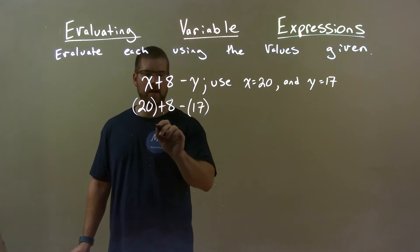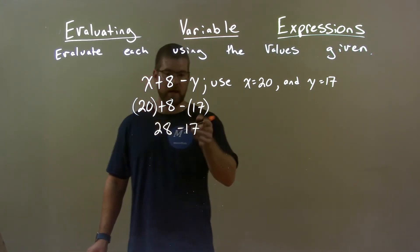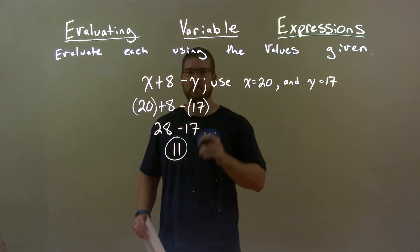Let's simplify. 20 plus 8 is 28. Then we subtract 17 from the 28 and we get 11. So 11 is our final answer.